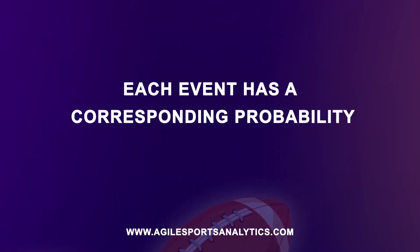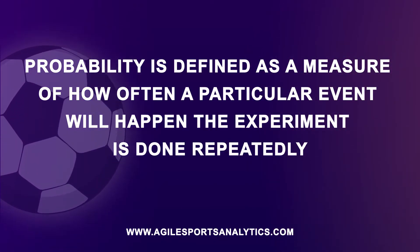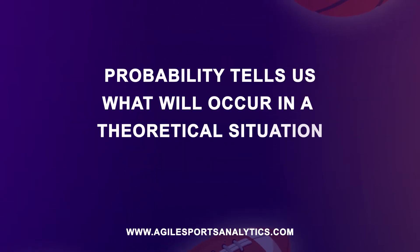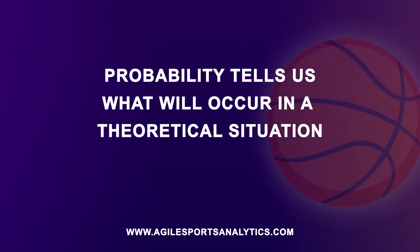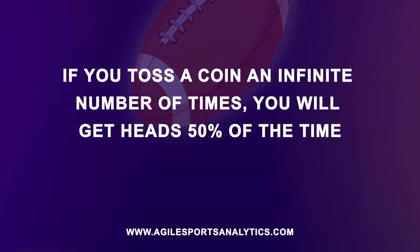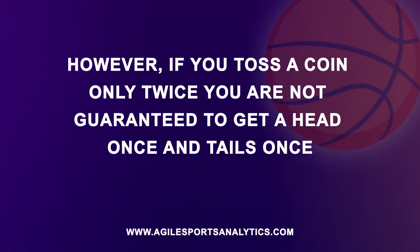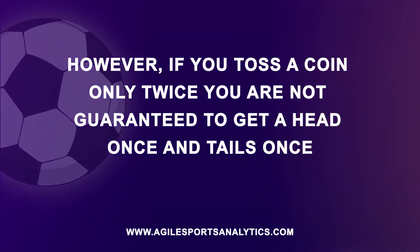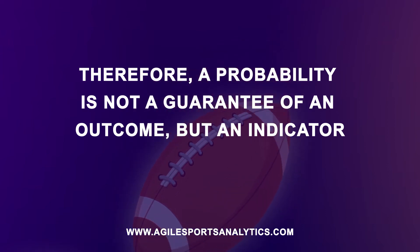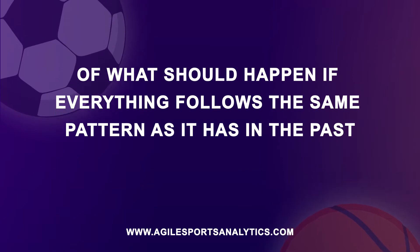Each event has a corresponding probability. Probability is defined as the measure of how often a particular event will happen if the experiment is done repeatedly. Probability tells us what will occur in a theoretical situation. If you toss a coin an infinite number of times, you'll get heads 50% of the time. However, if you toss a coin only twice, you are not guaranteed to get heads once and tails once. Therefore, a probability is not a guarantee of an outcome, but an indicator of what should happen if everything follows the same pattern as it had in the past.